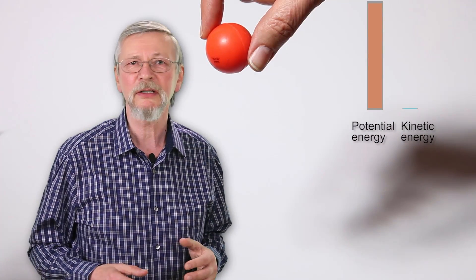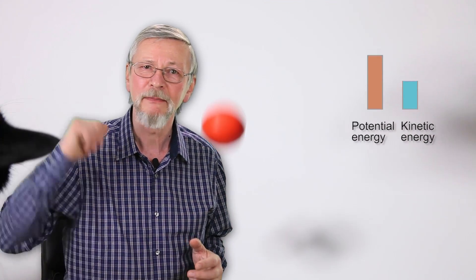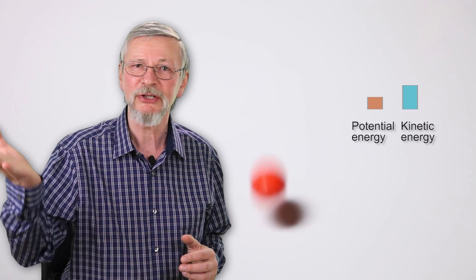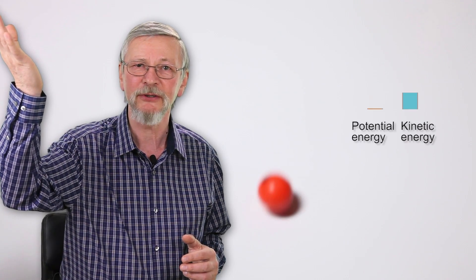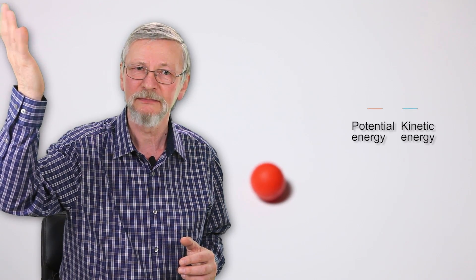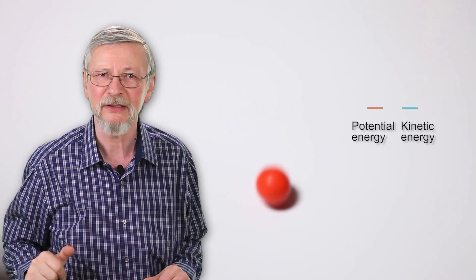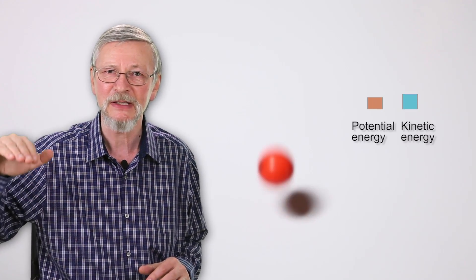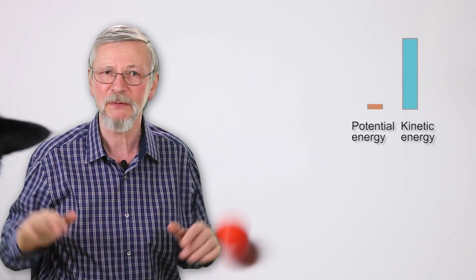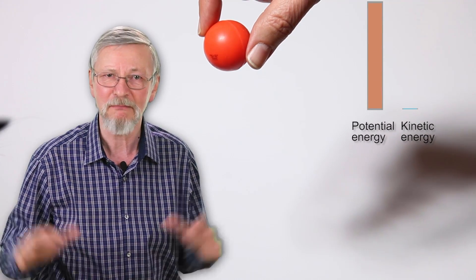Let us look at an example of such energy conversion. When a stone is thrown directly up, it flies and slows down. As it slows down, its kinetic energy is converted to potential energy. Eventually, the potential energy peaks when the stone stops flying up. The stone then falls down, and as it accelerates, kinetic energy increases while the potential energy decreases. Eventually, at the moment of impact with the earth, right before the stone stops moving, its kinetic energy reaches maximum.